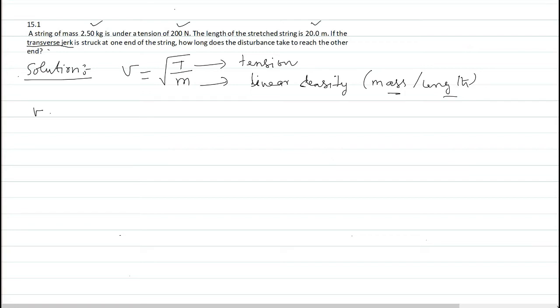So, first to find velocity of the jerk: root of tension, how much? 200. Mass per unit length. Mass how much? 2.5. Length how much? 20. Square root should be there till this. Is it clear?